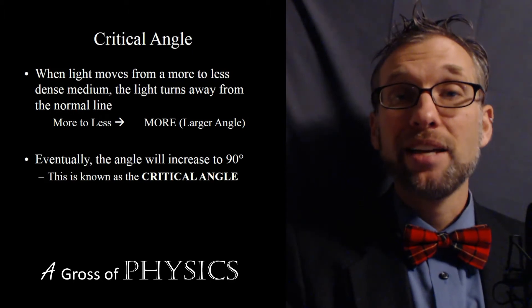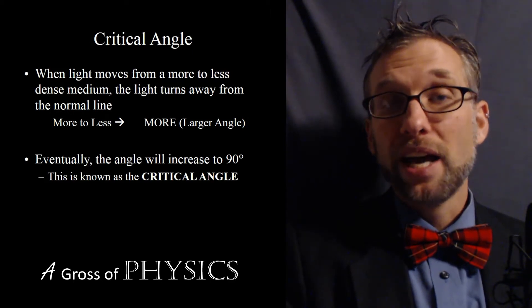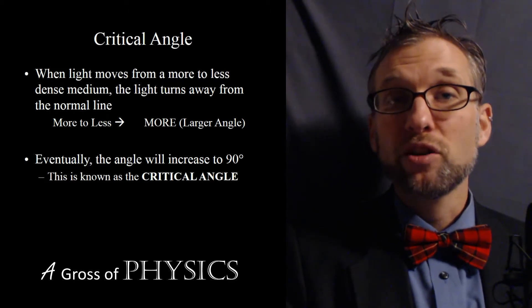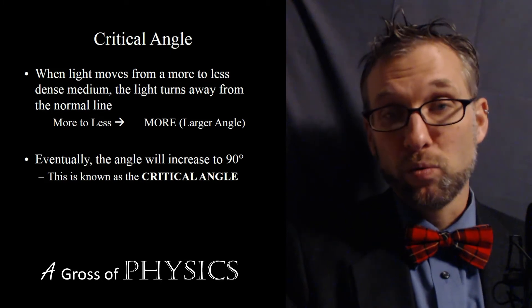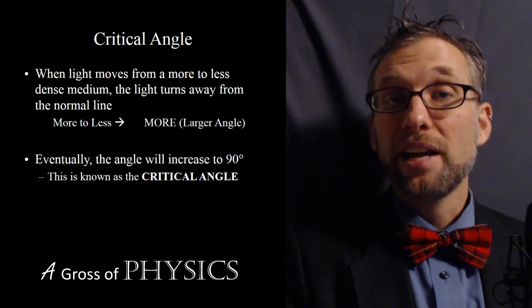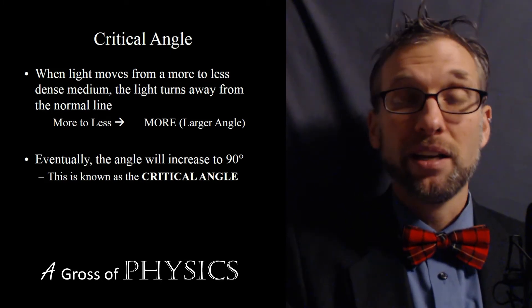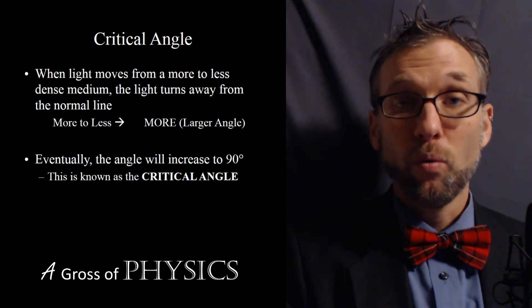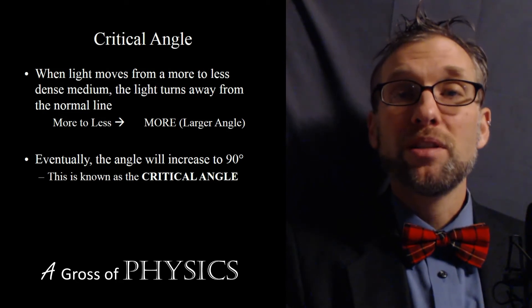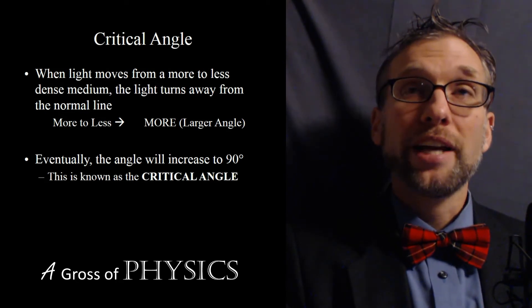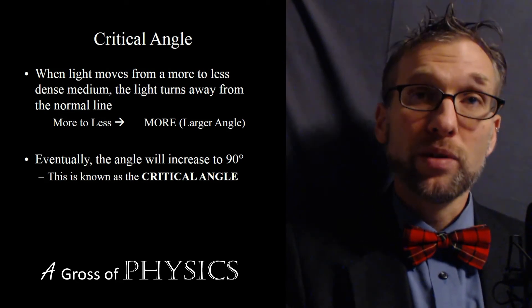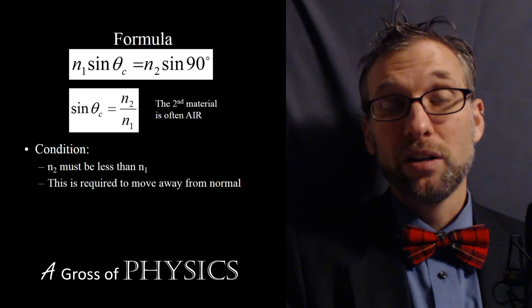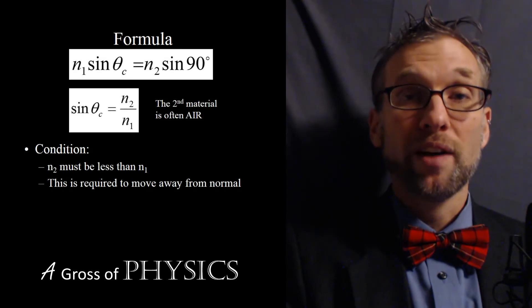Times sine of 90. The entire right side is going to be 1, since N2 is 1 and sine of 90 is 1. A lot of problems deal with light trying to escape into air, and in that case you'll often see the critical angle equation written as sinθc = 1/N.